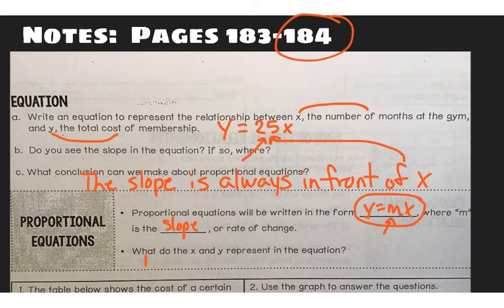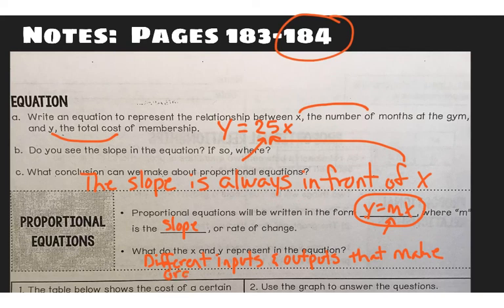What do the x and y represent in this equation? They represent different inputs, which is x, and outputs that make ordered pairs. And an ordered pair, for instance, is this. For zero, the input was zero, we got zero out. When the input was one month, we got $25 out. When the input was two, we got $50 out. And I know that's a lot of information, but it all ties together as we keep practicing.